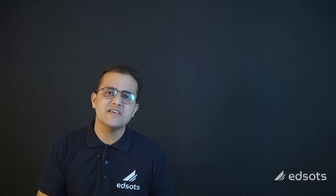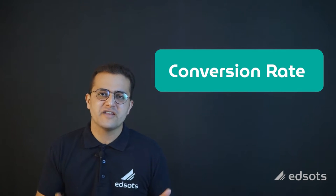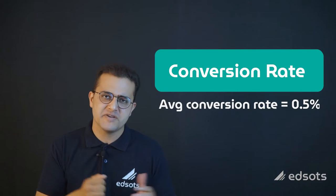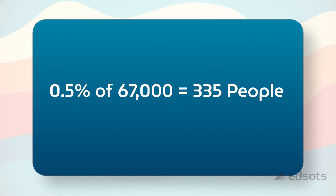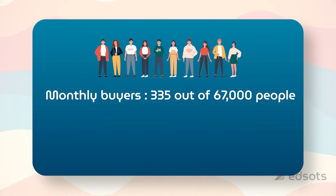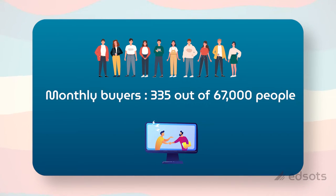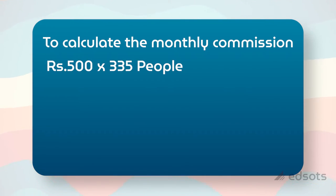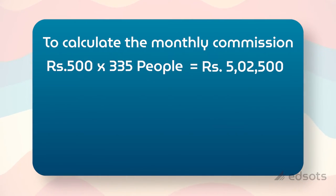Now let's see how many of the 67,000 people who land on our website will actually click our affiliate links and buy an air conditioner from Amazon — which is the conversion rate. The average conversion rate of an affiliate website is around 0.5%. 0.5% of 67,000 is 335. That means every month, 335 people would buy from our affiliate link. To calculate the monthly commission, we multiply 1,500 by 335, which comes out to approximately 5,02,500 rupees.